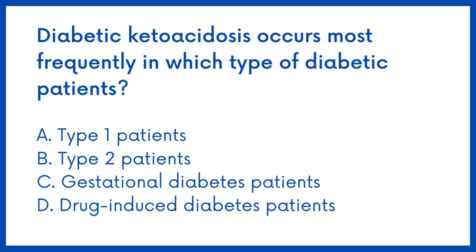Diabetic ketoacidosis occurs most frequently in which type of diabetic patients? Option A: Type 1 patients. Option B: Type 2 patients. Option C: Gestational diabetes patients. Option D: Drug-induced diabetes patients.